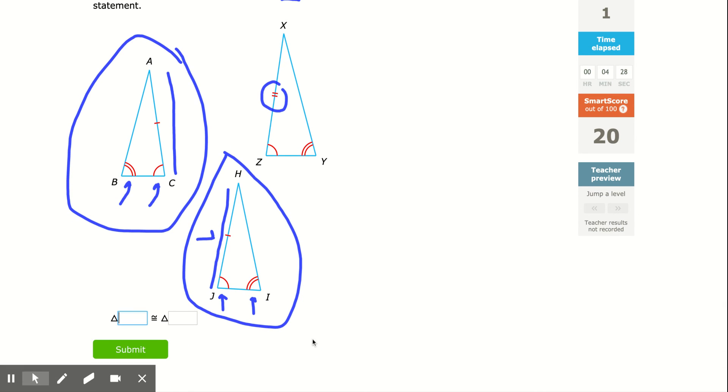And again, as always, write your corresponding letters in the same order. So since I did A, which is a non-marked angle, I'm going to do H, which is the non-marked angle. And I did the double arc angle, I'm going to do the double arc angle, not the J, but the I. Very important you go in the right order.